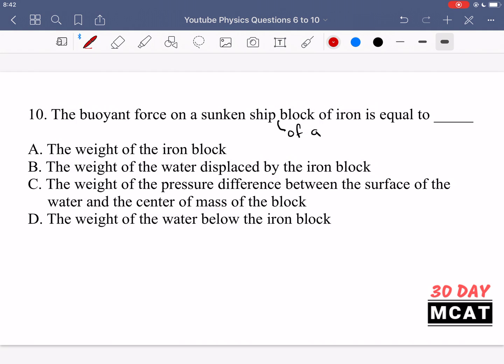In question 10, it says the buoyant force on a sunken ship, a buoyant force on a sunken ship of a block of iron is equal to blank. So in this question, we're not talking about the sunken ship. We're just saying there's a sunken ship and on top of it there's a block of iron. For the block of iron, so the buoyant force on the block of iron is equal to what? Well buoyant force is equal to the weight of water that an object displaces.